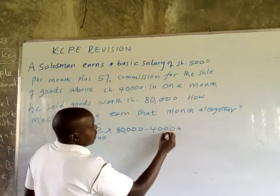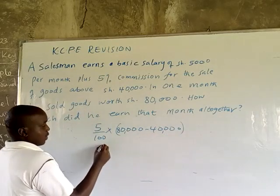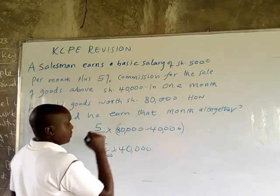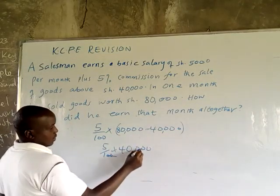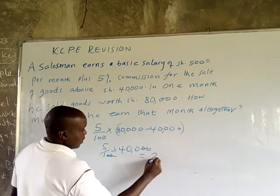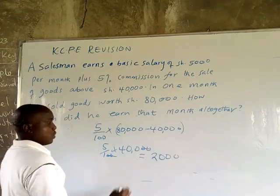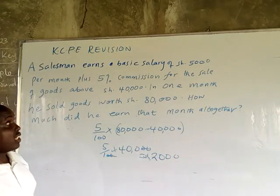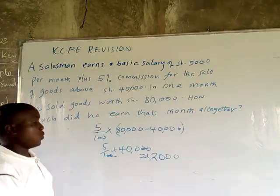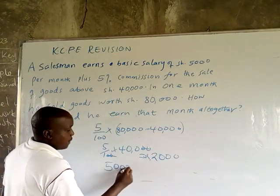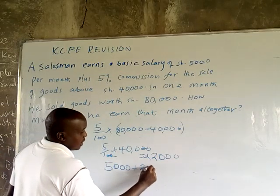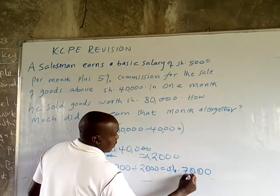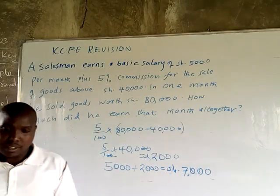So we subtract 40,000 from 80,000 to get the amount eligible for commission, which is 40,000. The 5% commission on 40,000 is 2,000. Therefore, the total earnings for the month are 5,000 plus 2,000, which equals 7,000 shillings.